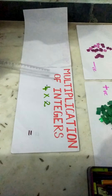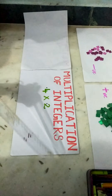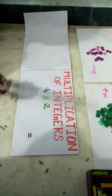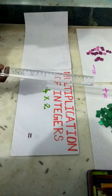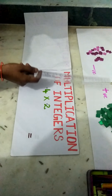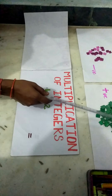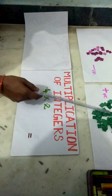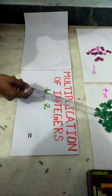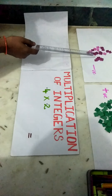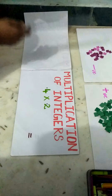Now we are going to learn multiplication of integers through an activity. To do this activity we need 4 to 5 plain sheets and any 2 colors as counters, like wingies, star stickers, or foam sheets cut into pieces. Here, the green color represents positive and the rose color represents negative.